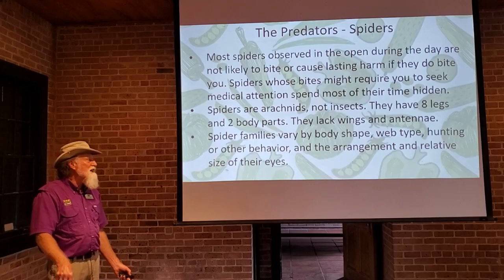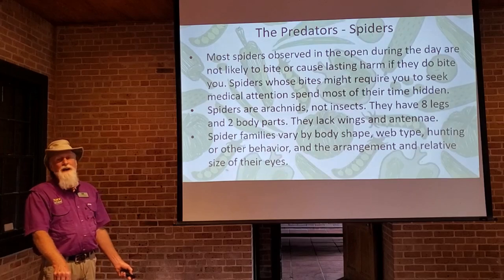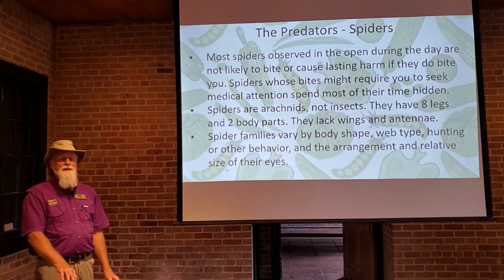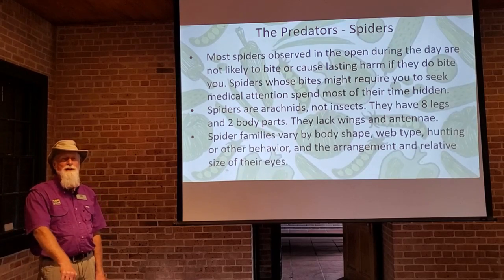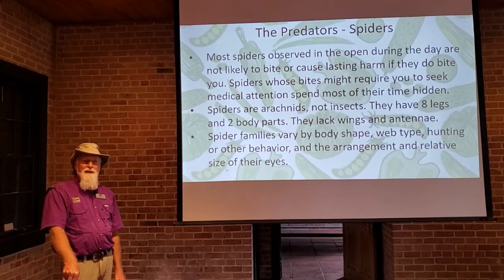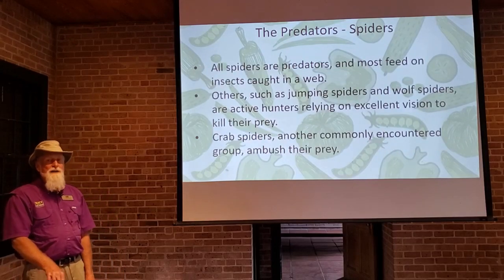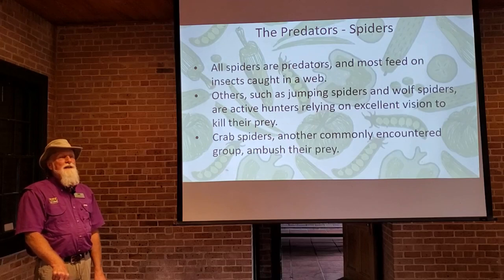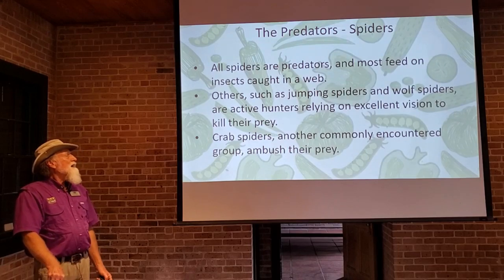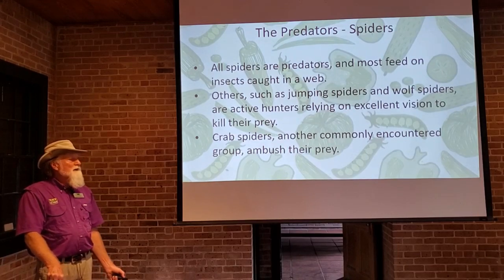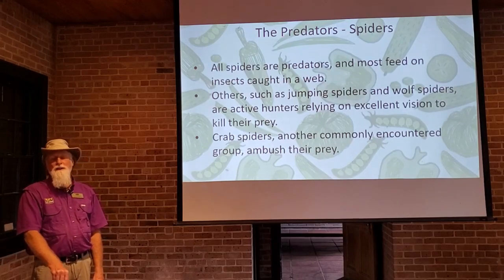Spiders vary by their body shape, web type, the way they hunt, and the way their eyes are arranged on their head. All spiders are predators, and the majority do feed on insects that they trap in their webs. Jumping spiders and wolf spiders are active hunters — they go out seeking their prey, and they have really good vision to detect prey when it's near them.